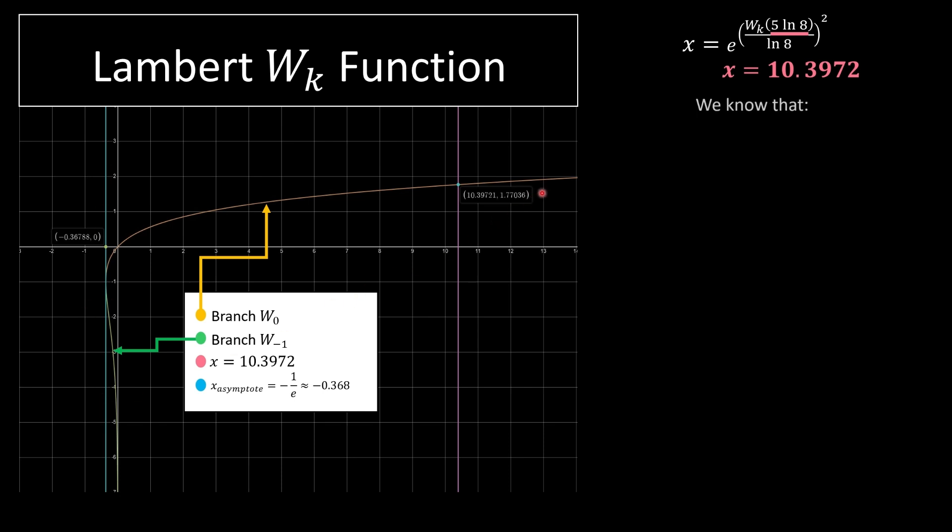Now, we have three cases. So our first case is our value greater than zero. In our scenario, yes, it is. It's 10.39. And we're gonna have one real solution and that's in branch W of 0. So as you can see on the graph, this orange line is W of 0 and it intersects right over here.